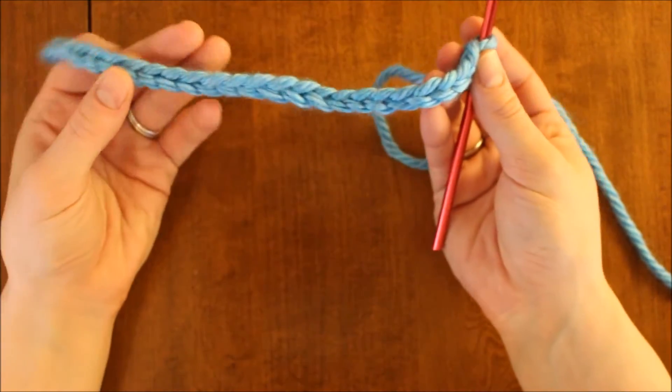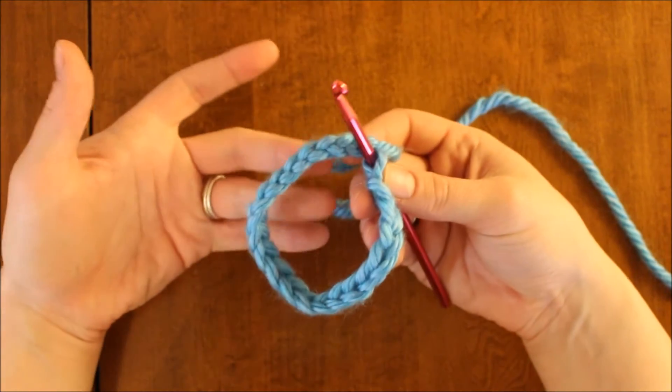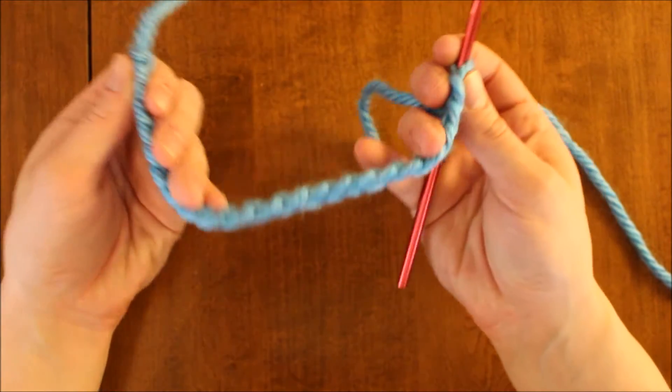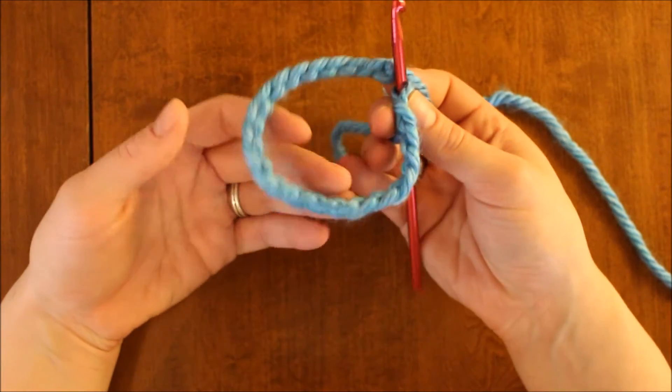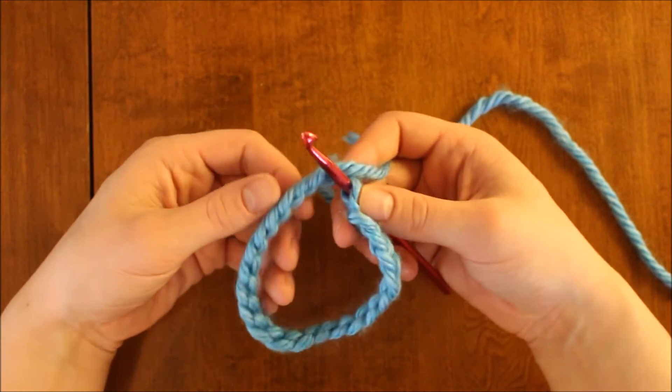I want to be careful not to twist the chain as I do this, that'll cause me problems down the line, but keeping the backs of the chains all facing into the circle, create a loop.